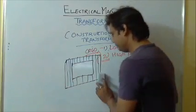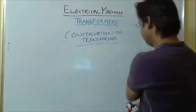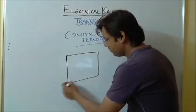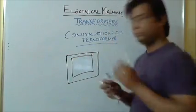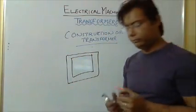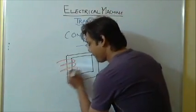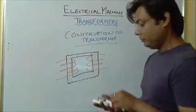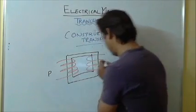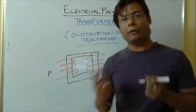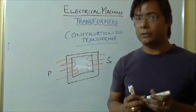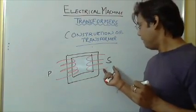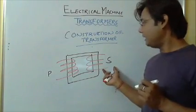Third thing regarding construction is that when we have a core, it will be having windings. This is the primary and this is called the secondary. Whichever is connected to the supply will be treated as a primary coil, and whichever is connected to the load is called the secondary.